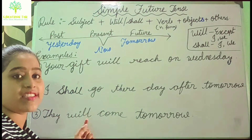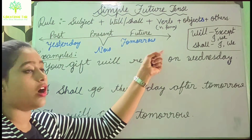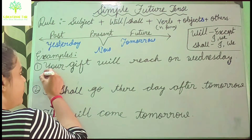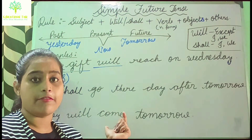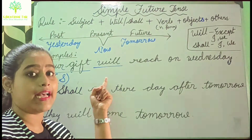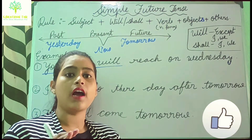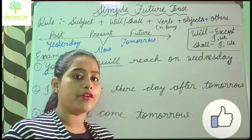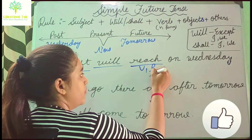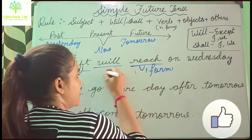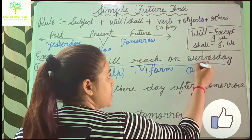Here are some examples. 'Your gift will reach on Wednesday.' Here 'your gift' is the subject, then 'will' is the helping verb — I have used 'will' because the subject is 'your gift', not 'I' or 'we'. Then 'reach' is the V1 form, and 'on Wednesday' is others.